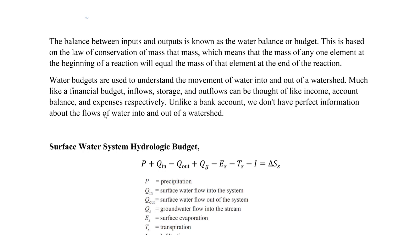For a water budget we consider inflows, storage, and outflows. For a financial budget: income is the inflow, account balance is the storage, and expenses are the outflows. Unlike a bank account, we do not have perfect information about the inflows and outflows of water into and out of a watershed, so we rely heavily on models that are continuously updated and changing.